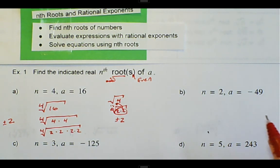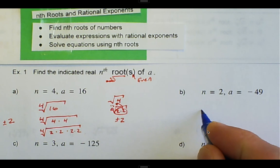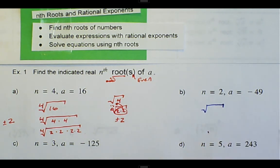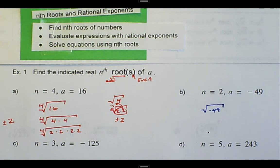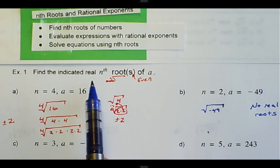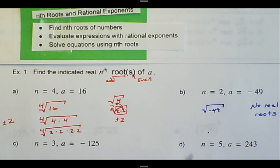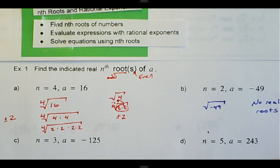As we look over at part b, we're looking at the second root, the square root of negative 49. In this case, we do not have to write down the number on the radical. And negative 49, in this case, because it's negative, right away we know there's no real solution, no real roots. So find the indicated real nth roots - in this case, we don't have them.